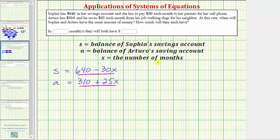So we need to solve the equation $640 minus 30x equals $310 plus 25x. To solve for x we need the x terms on the same side of the equation. So let's subtract 25x on both sides of the equation. Notice how this will move the x terms to the left side and therefore at the same time let's also subtract 640 on both sides.